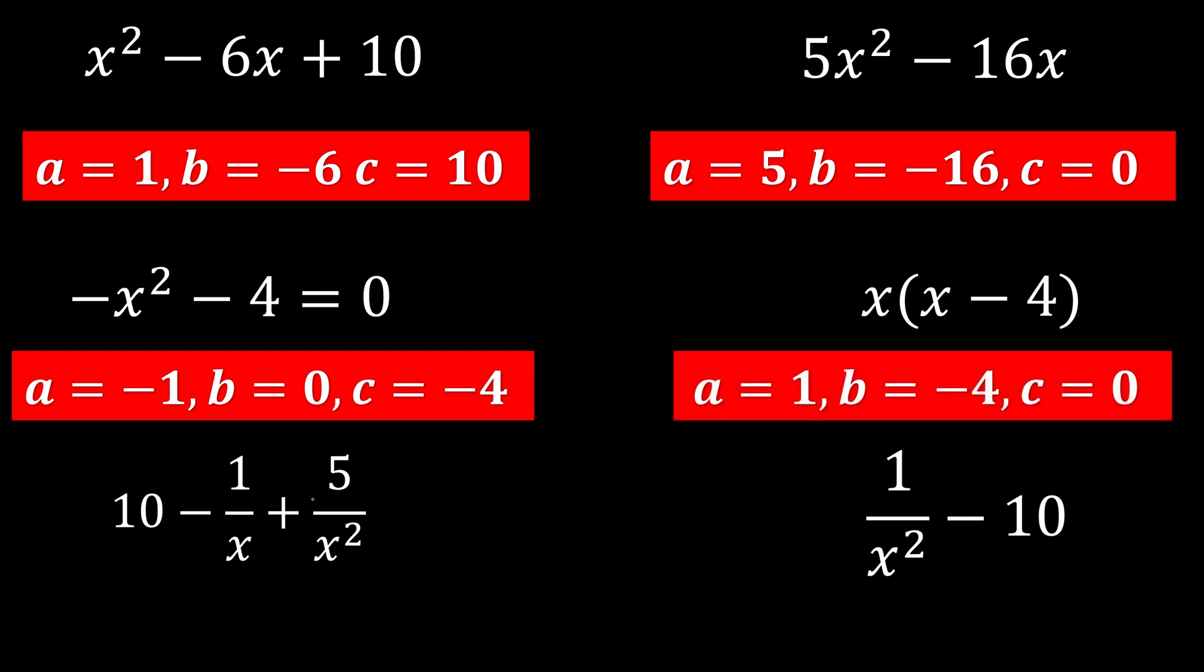If we see a fraction, we're going to multiply the highest power in the fractions with everybody. So 10 times x squared is 10x squared. Negative 1 over x times x squared, x and x cancel, you're left with negative x. And 5 over x squared times x squared, you're left with 5. So a is 10, b is negative 1, and c is 5.